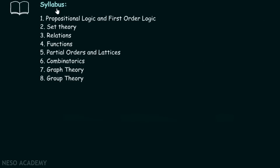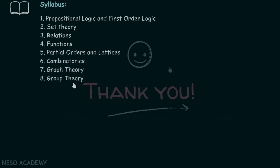Now let's consider the syllabus of discrete mathematics. In this course, we are going to talk about propositional logic and first order logic, including predicates and quantifiers. We will also have a discussion on set theory, then move to relations and functions, and then to partial orders and lattices. We will cover combinatorics including permutations, combinations, and counting techniques. We will also talk about graph theory, which is very important from a computer science perspective and will be studied deeply. Finally, we are going to cover group theory, which is also a very important topic.